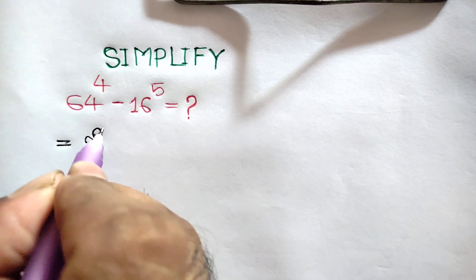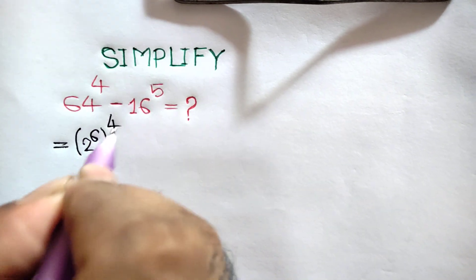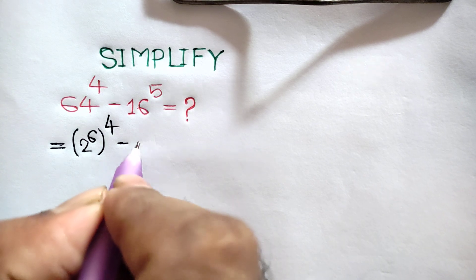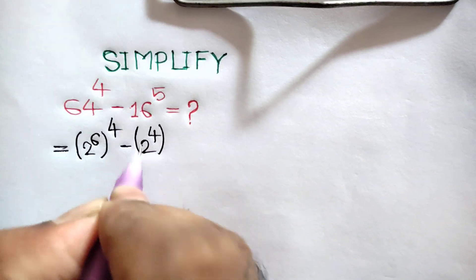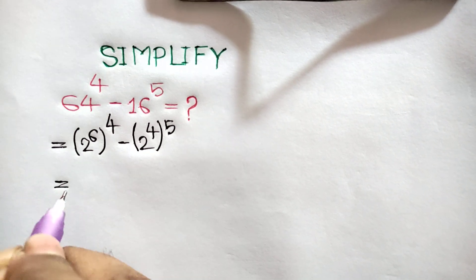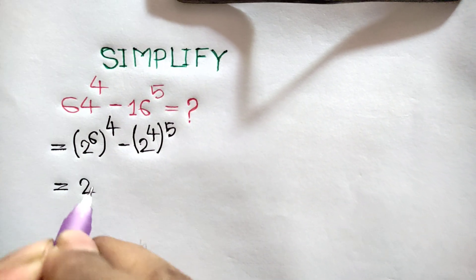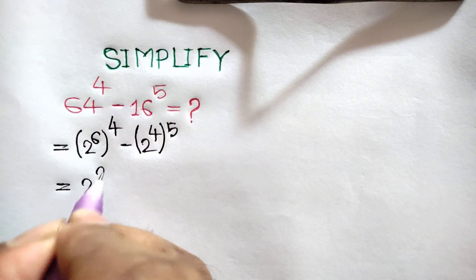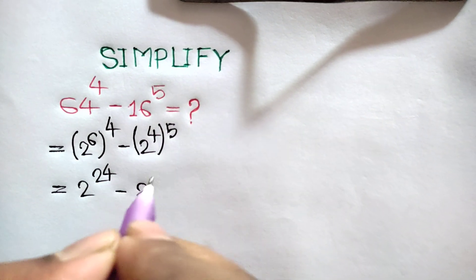...this 4, minus 16 can be written as 2 to the power 4, whole to the power 5. This is equal to 2 to the power 6 times 4, that means 24, minus 2 to the power 4 times...